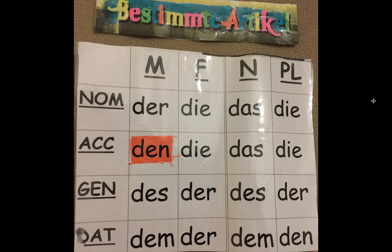This table has the genitive third. I sometimes favour having the dative in the third line. So for the dative: der goes to dem, die goes to der, das goes to dem, die goes to den. And for the genitive: der goes to des, die goes to der, das goes to des, die goes to der.